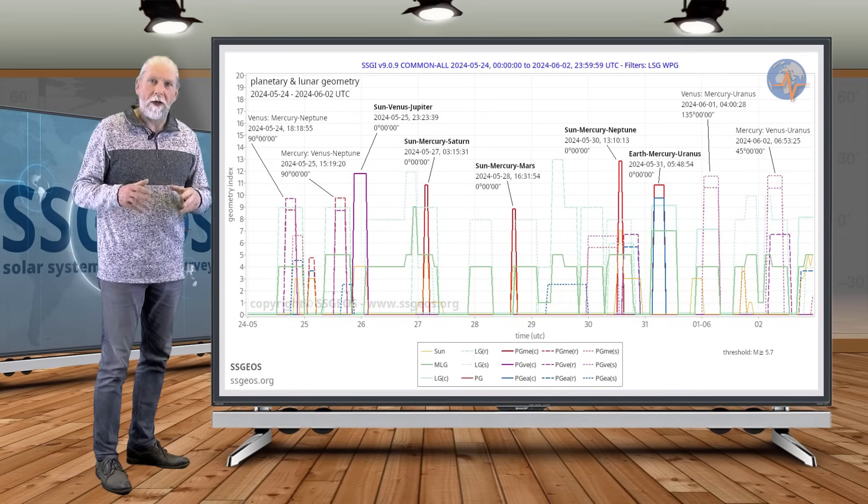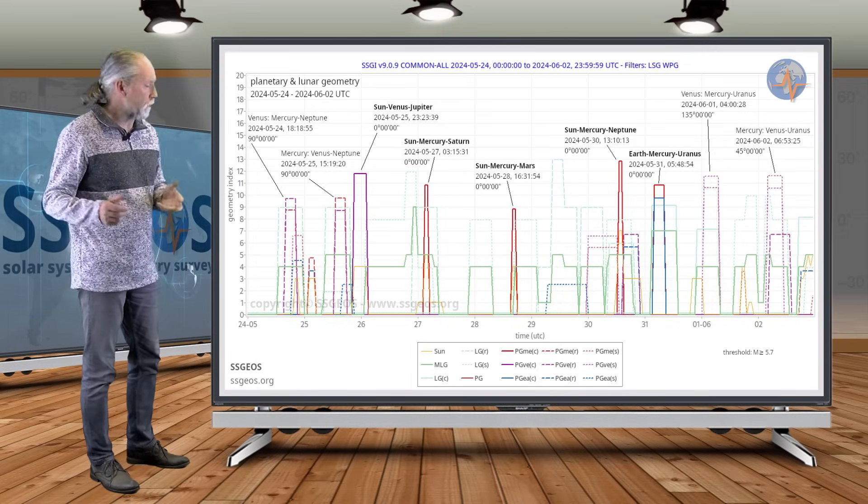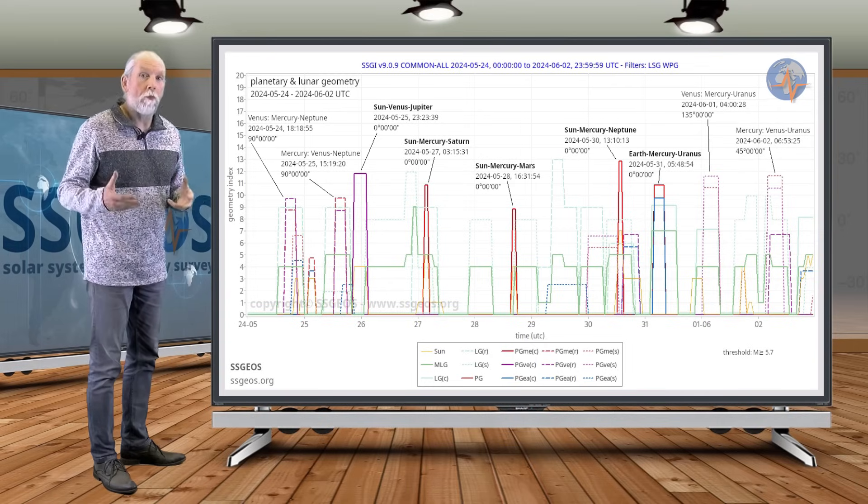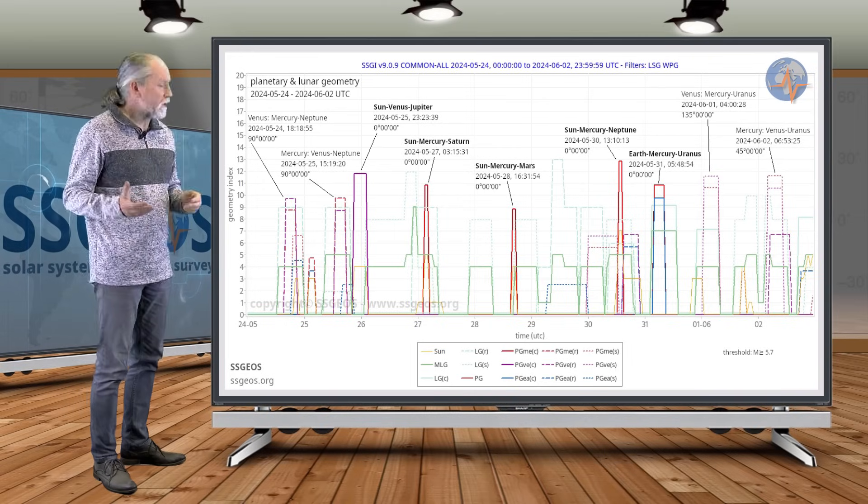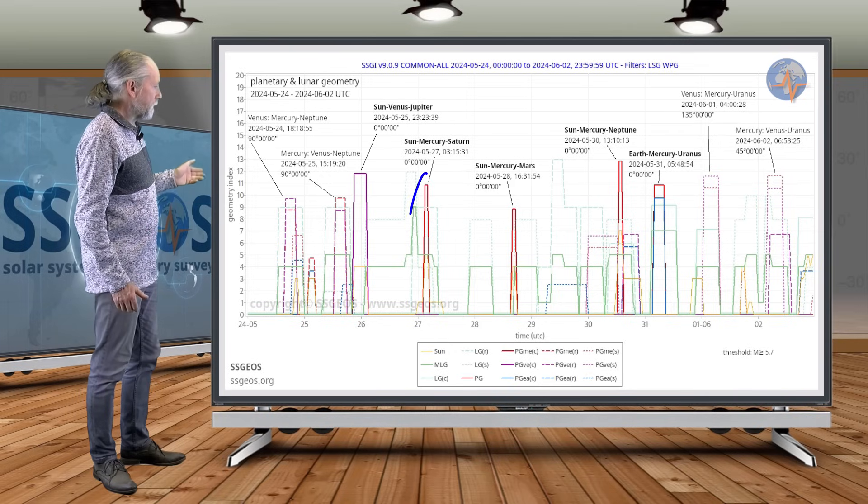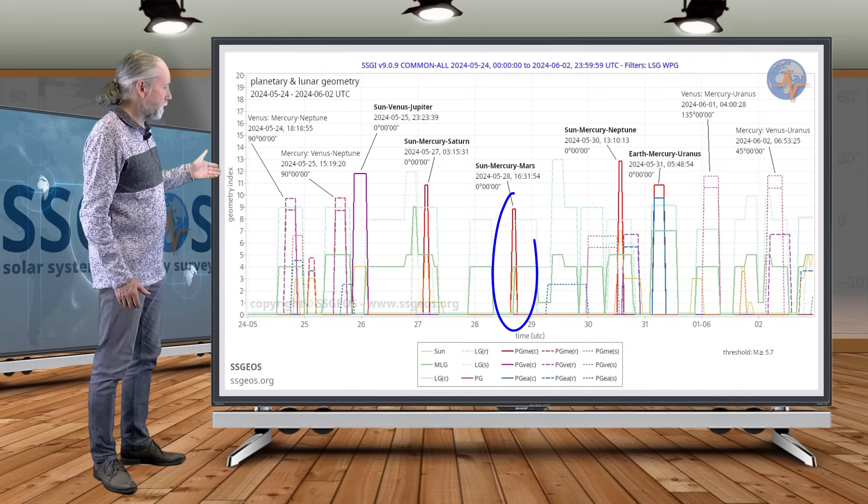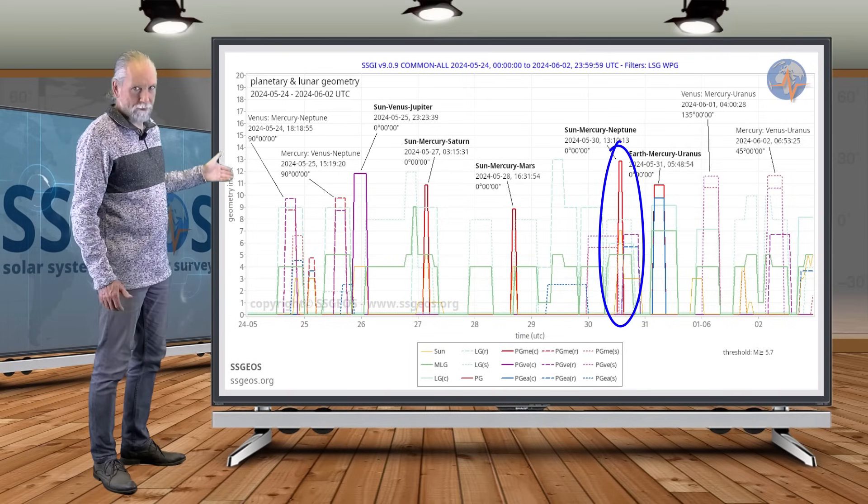That brings us to the planetary geometry that we're going to have in the coming timeframe up until the 2nd of June. We're going to have planetary conjunctions above average throughout the week, primarily with Mercury. These are the red peaks, Sun-Mercury-Saturn on the 27th and on the 28th, Sun-Mercury-Mars, and then on the 30th, Sun-Mercury-Neptune.